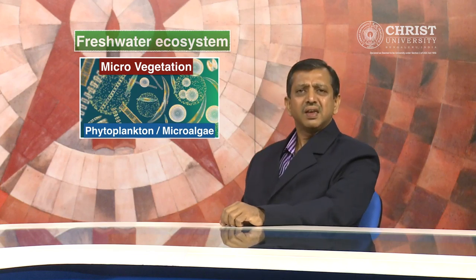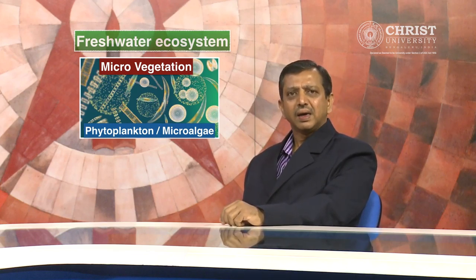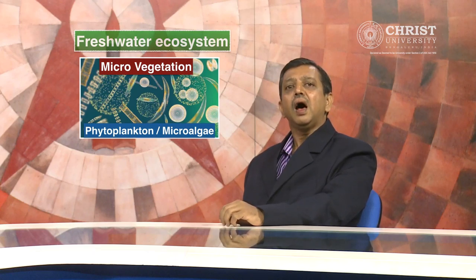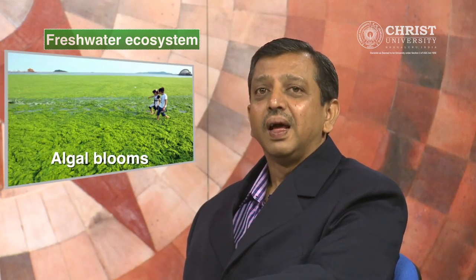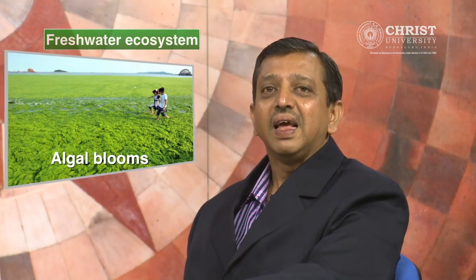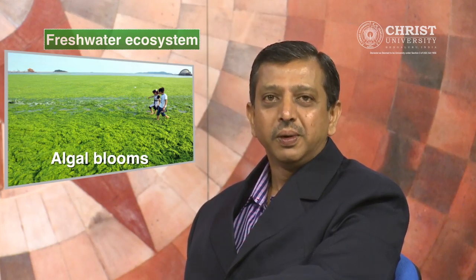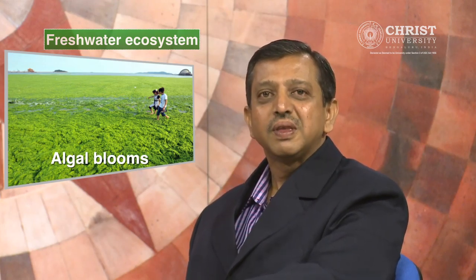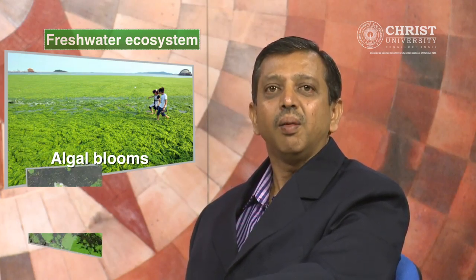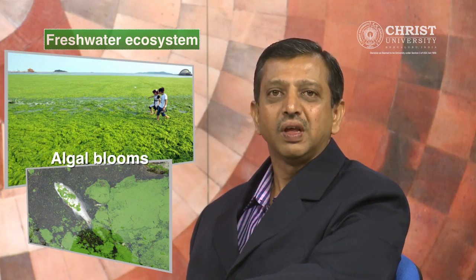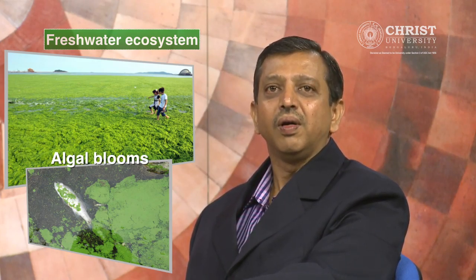In a balanced ecosystem, phytoplankton provides food for a large number of consumers. Sometimes when surplus nutrients enter the pond or lake, phytoplankton grow out of control and form what is known as algal blooms, which is harmful. These blooms can produce extremely toxic compounds that have harmful effects on fishes and other creatures in the pond or lake.